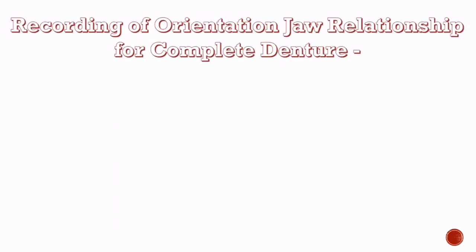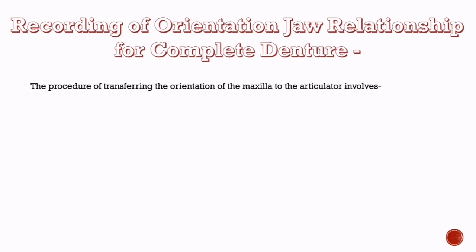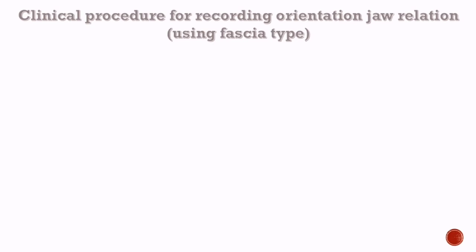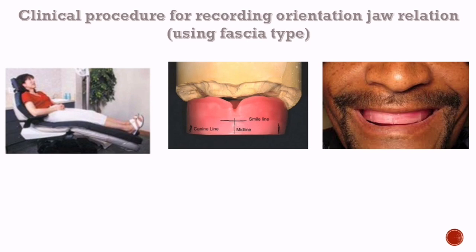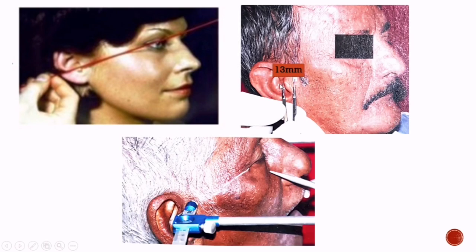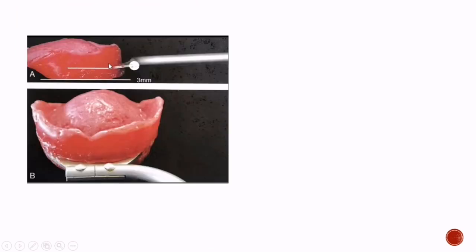Now let's know about recording of orientation jaw relationship for complete denture. The procedure involves a face bow record and face bow mounting. First, the patient is seated in a comfortable position with the head upright and supported by a headrest. Then the maxillary occlusal rim is inserted into the patient's mouth, contoured, and all required guidelines are marked. A point 13 mm from the tragus of the ear on the cantho-tragus line is marked on both sides. The bite fork is flamed and attached anteriorly to the maxillary occlusal rim, 3 mm above the incisal plane and parallel to the occlusal plane.